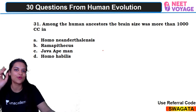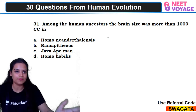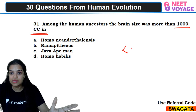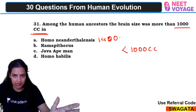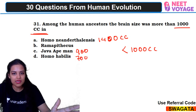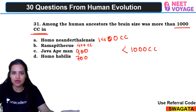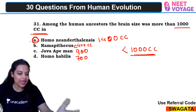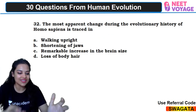Bonus question 31: among human ancestors, which had brain size more than 1000 cc? Neanderthal man had 1400 cc — more than 1000. Java man had 900 cc, Homo habilis had 700 cc, Ramapithecus and Dryopithecus had approximately 400 cc. So A — Homo neanderthalensis — would be the right answer. Kaushal Shreya and Ram Prasad answered correctly.